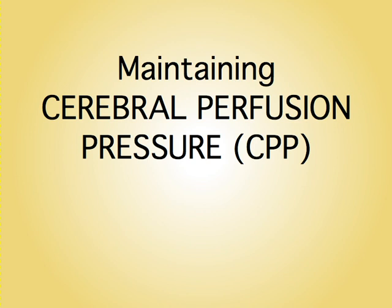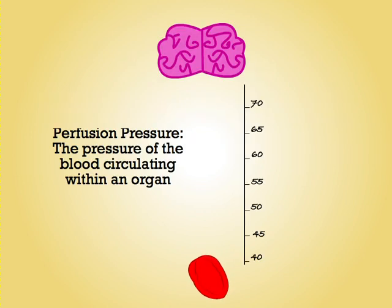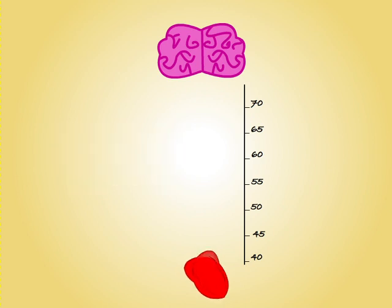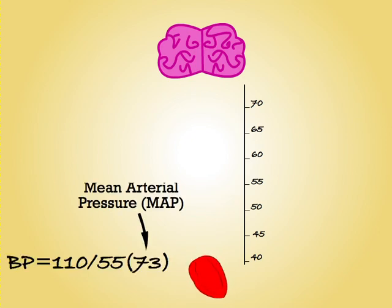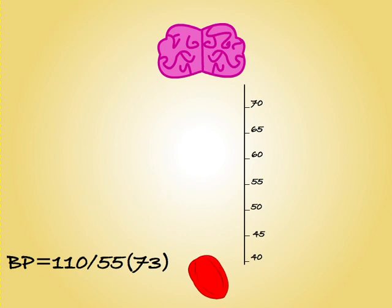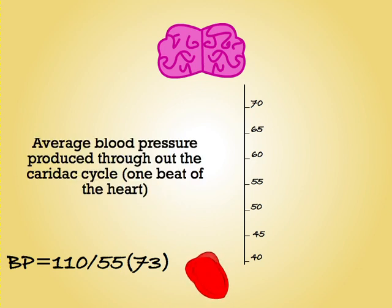All of the body's organs need to receive blood at an adequate pressure in order to be effectively perfused. When looking at perfusion pressure, we tend to refer to the mean arterial pressure of the blood, or the MAP. The MAP is a number that normally comes in brackets at the end of the blood pressure on your monitor and represents the average blood pressure throughout the cardiac cycle. In this case, we can see that the patient has a blood pressure of 110 over 55, giving them a MAP of 73.